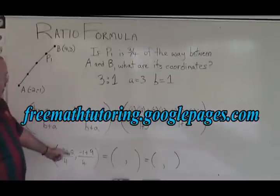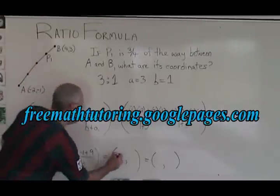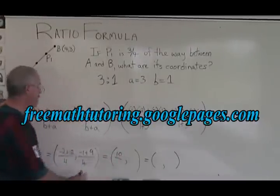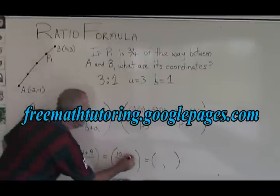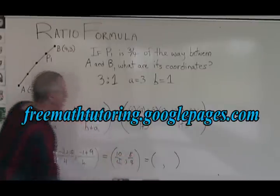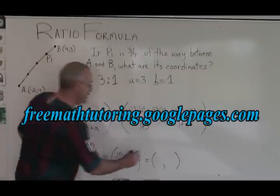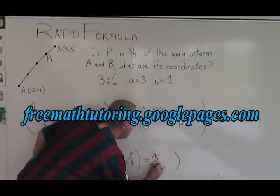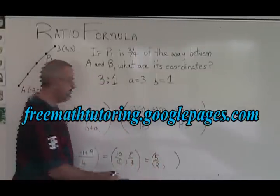Simplifying further, -2 plus 12 equals 10 over 4, and -1 plus 9 equals 8 over 4. 10 over 4 reduces to 5/2, and 8 over 4 reduces to 2.